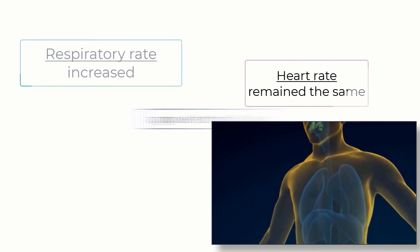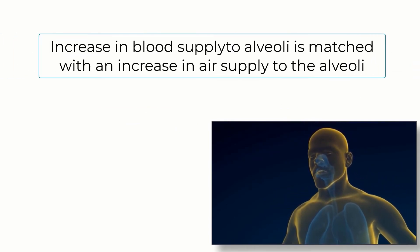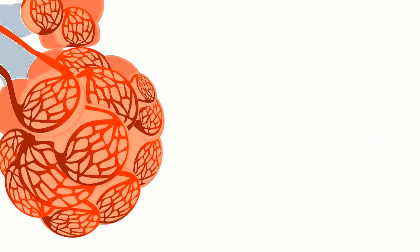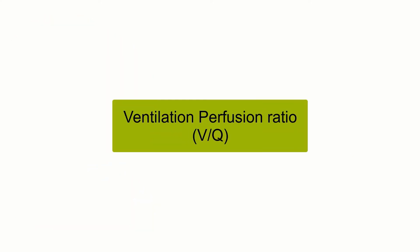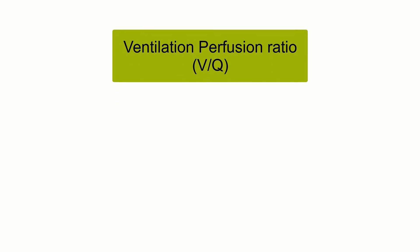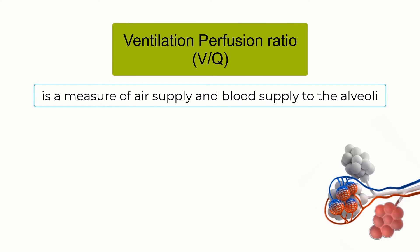This is why it is important that in the lungs, an increase in blood supply to alveoli is matched with an increase in air supply to the alveoli. Put another way, when blood begins to perfuse the alveoli, the lungs also need to ventilate the alveoli if gas exchange is to occur. This is the basis for the ventilation-perfusion ratio, V over Q. The ventilation-perfusion ratio is a measure of air supply and blood supply to the alveoli. When additional alveoli are activated during exercise, the body works to ensure that the newly-recruited alveoli are at a ventilation-perfusion ratio as close to 1 as possible.